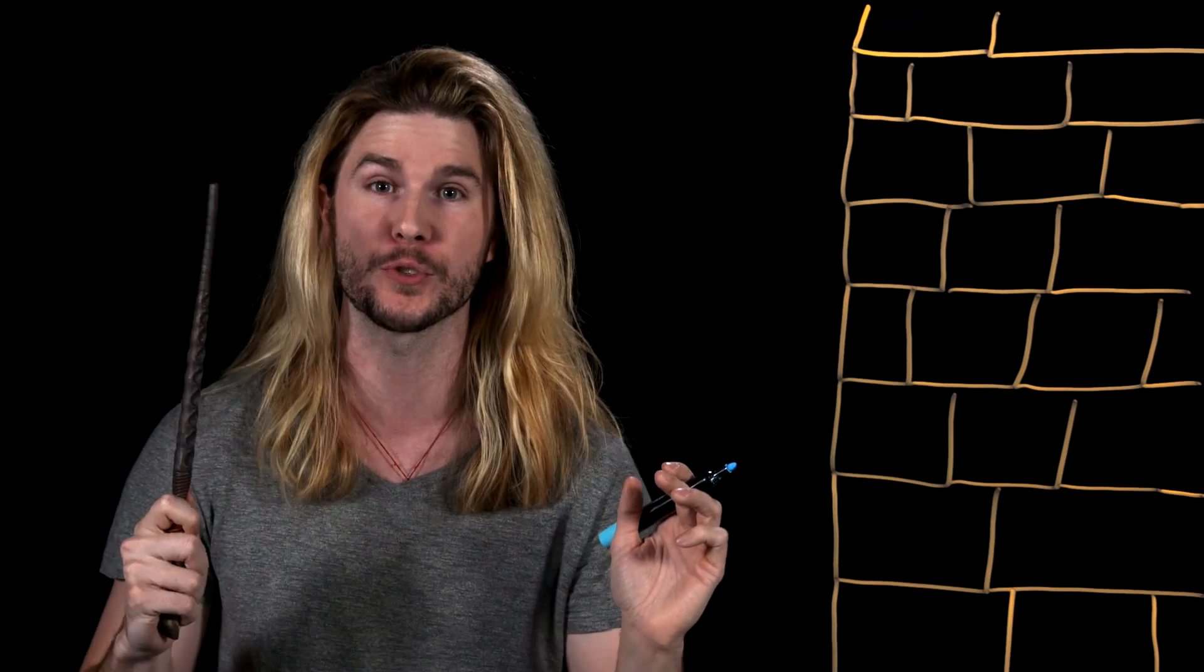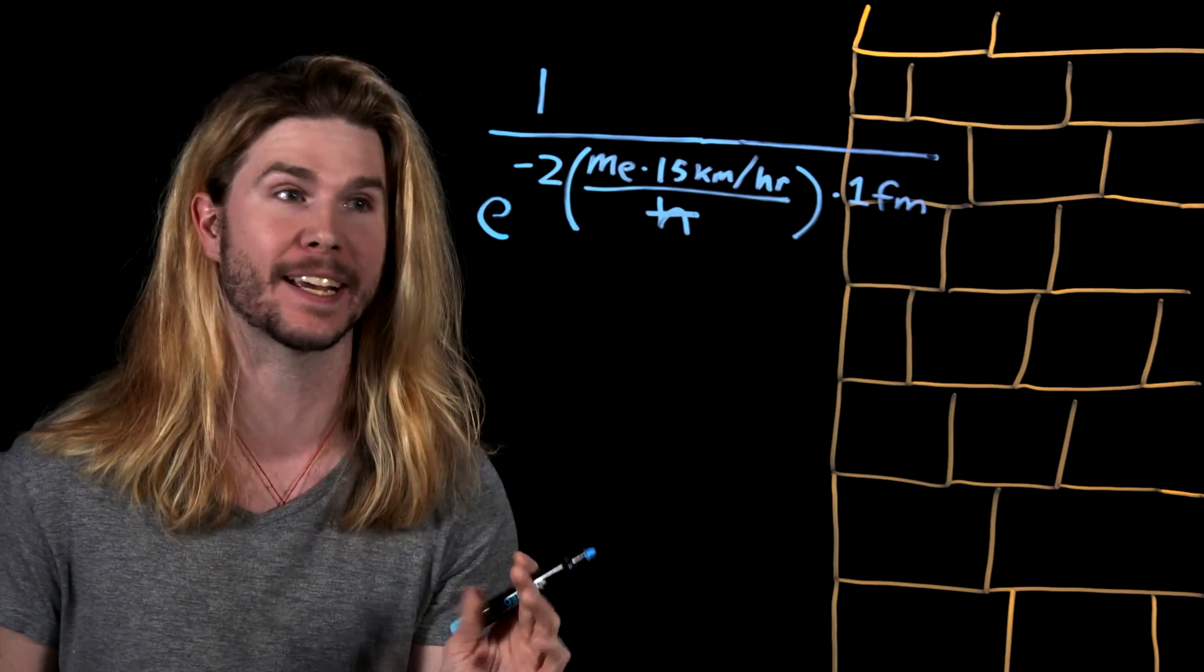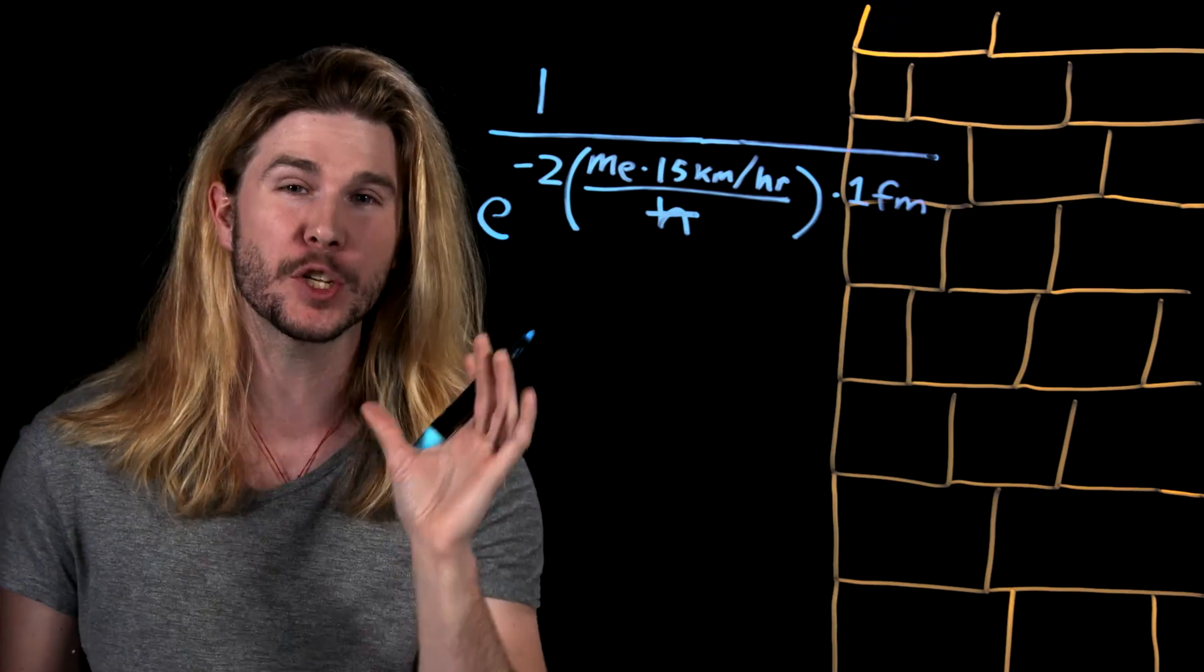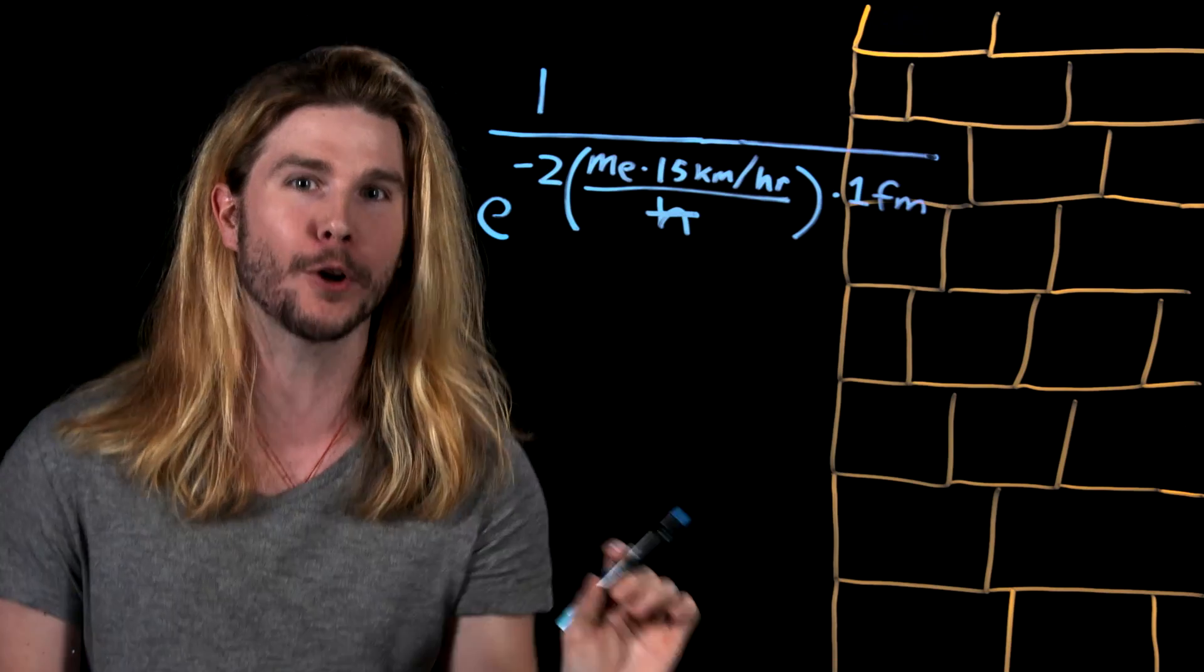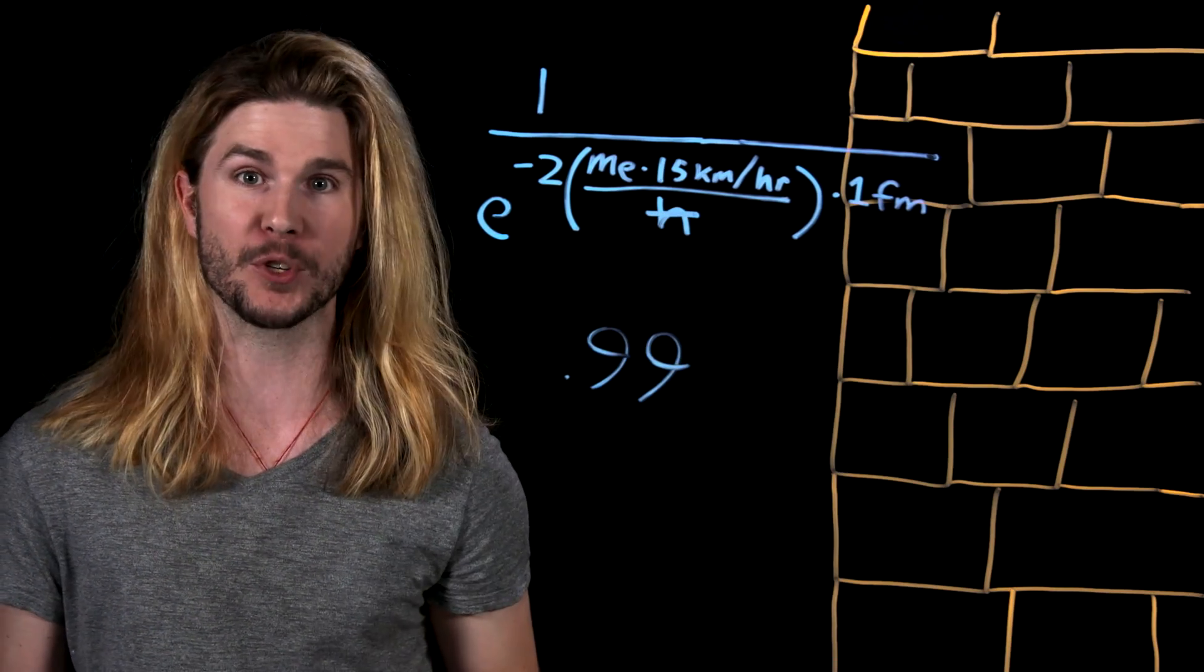So maybe what the Ministry of Magic does if we're trying as best we can to relate this to real physics maybe they first identify magic users and then imbue them with some sort of property through magic that makes their entire body as massive as an electron. If the spell did that and reduced the width of the barrier to something closer to the scales of quantum mechanics like one femtometer which is much much less than one nanometer then the chances that a wizard or witch would quantum tunnel through platform 9 and 3 quarters gets closer to 99 percent.